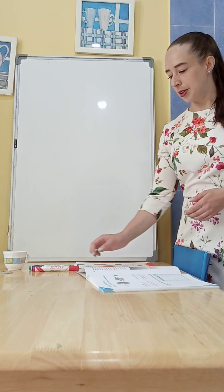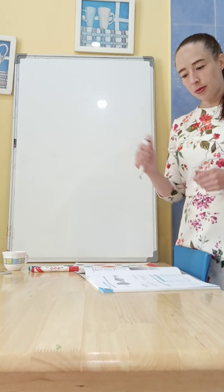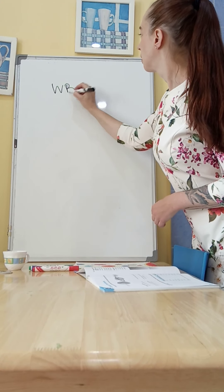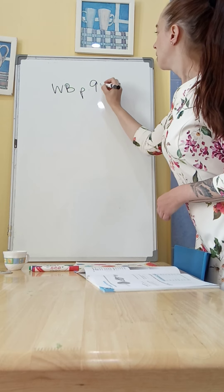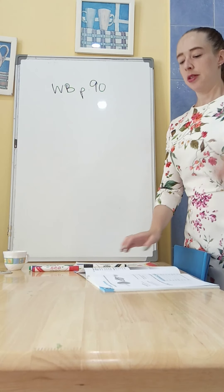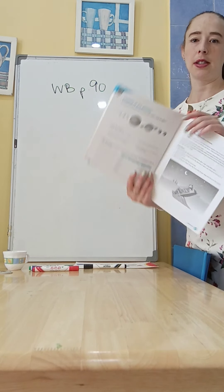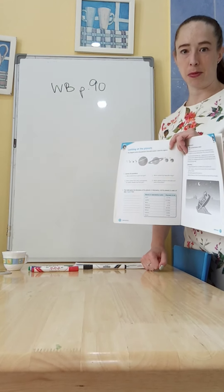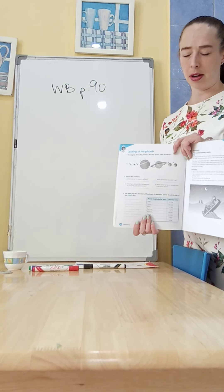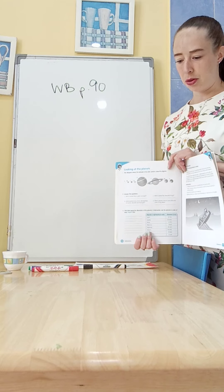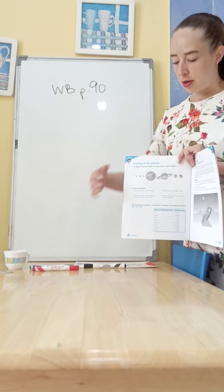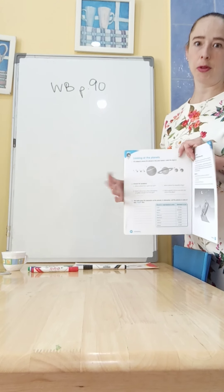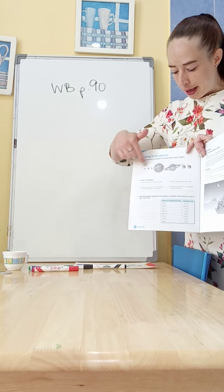The first activity is from your workbook and it's page 90. If you need help with this, remember that it's in your pupils book, all this information. We also talked a lot about this this week on Zoom and you did a lot of reading about this. So all of this information, if you need help, you can find in your pupils book.